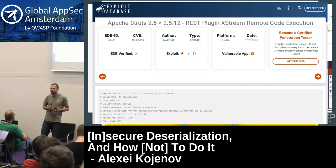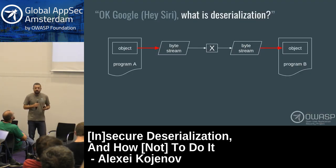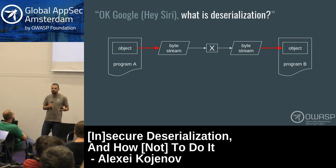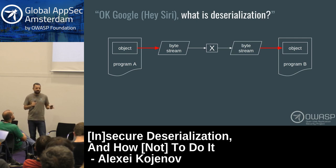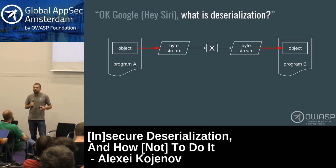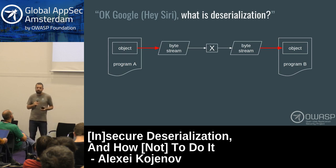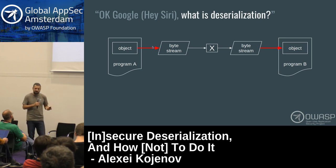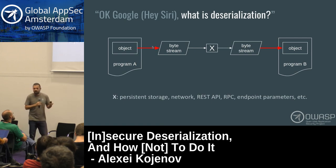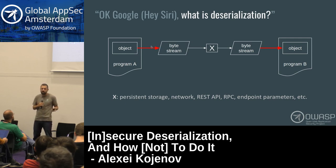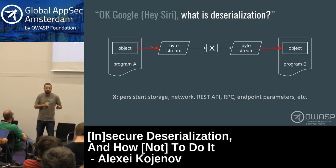What is deserialization? Let's say you have a program with some object in memory and you want to send it to a different program. That object is converted to a byte stream, sent over some channel, and then on the other end that byte stream is reconverted to create a copy of that object. The first process is called serialization and the second is called deserialization. The channel can be anything: local storage, network transfer, a REST API parameter — anywhere you can push bytes.